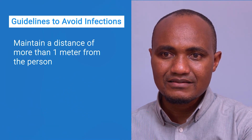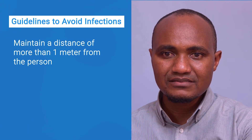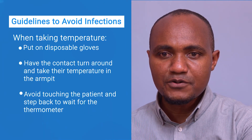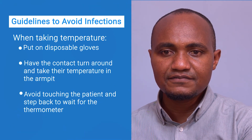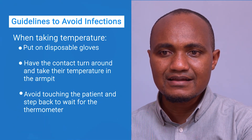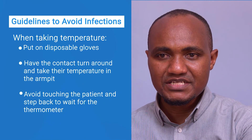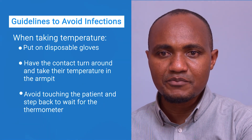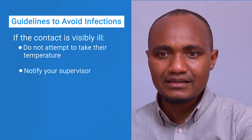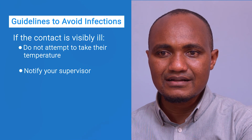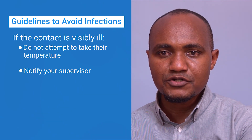What are the best practices of contact tracing? The following guidelines help ensure the process flows smoothly without mistakes or unintended infections. Maintain a comfortable distance of more than one meter from the person. When taking a contact's temperature, put on disposable gloves, have the contact turn around, and take their temperature in the armpit. Avoid touching the patient and step back to wait for the thermometer. If the contact is visibly ill, do not attempt to take their temperature — notify your supervisor.